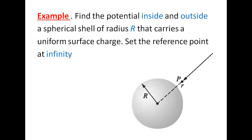Here we represent the spherical shell of radius R. We need to find the potential at a point P. For the outside case, the distance r will be greater than R. For the inside case, point P inside the spherical shell means r will be less than R.